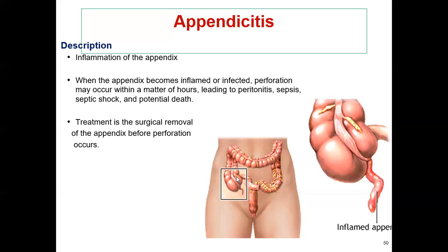Symptoms start with a dull pain in the middle or right side of the abdomen, and the pain moves down to the lower right abdomen because of the inflammation of the appendix.